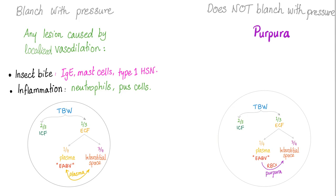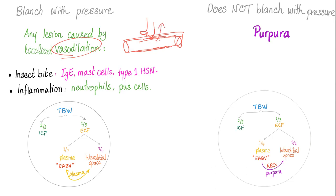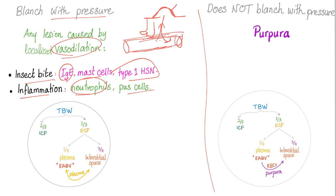So let's divide lesions into those who blanch on pressure and those who do not blanch. Any lesion caused by localized vasodilation will blanch — because you can press on the vessel fluid and it goes back, making it blanchable. This includes insect bites, IgE, mast cells, type 1 hypersensitivity reactions, or inflammation with neutrophils and pus cells. On the other hand, purpura does not blanch because the red blood cells are stuck within the dermis — you cannot press on them, they are not going to obey. They do not blanch.